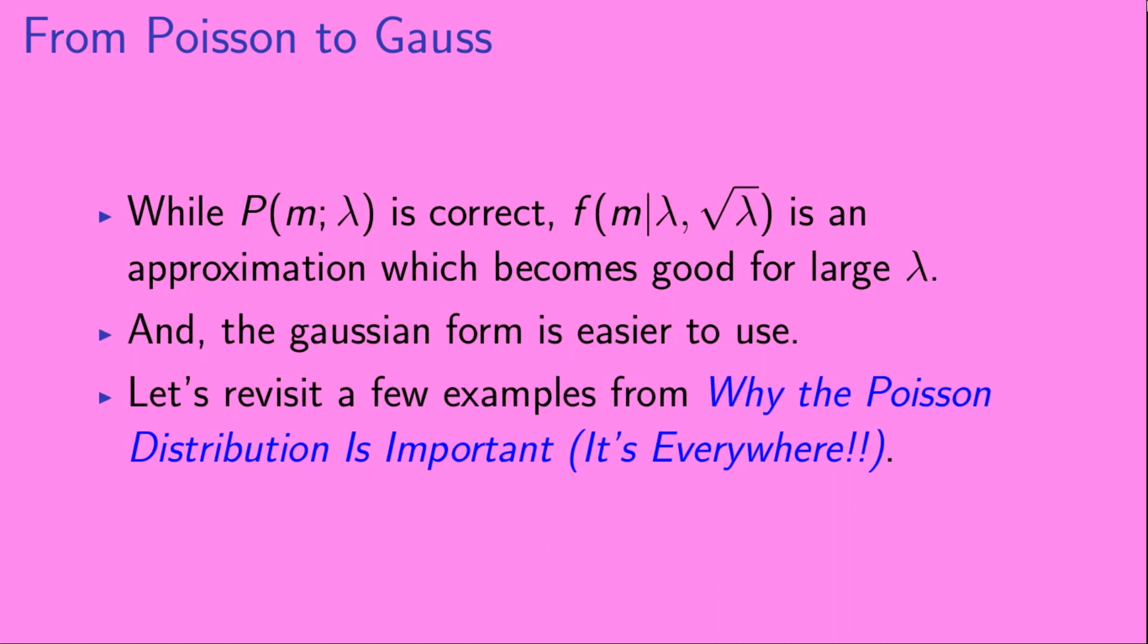Now, while the Poisson distribution is correct in these cases, the Gaussian distribution is an approximation which becomes really good for large values of lambda. And it also turns out that the Gaussian form is a lot easier to use. So, let's revisit a few examples from our previous video on why the Poisson distribution is important.